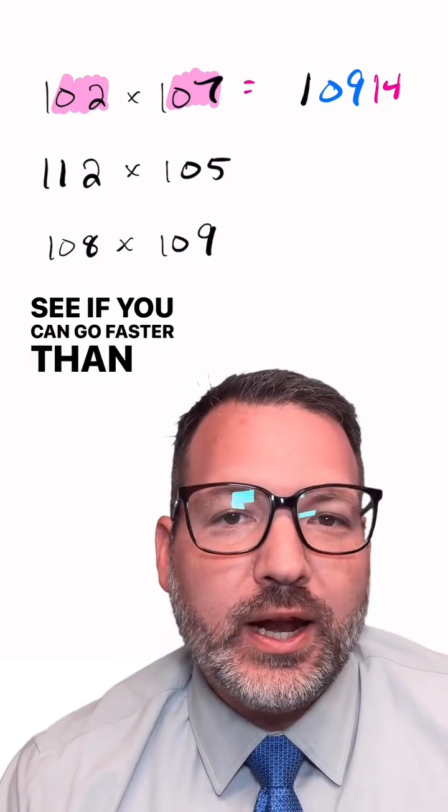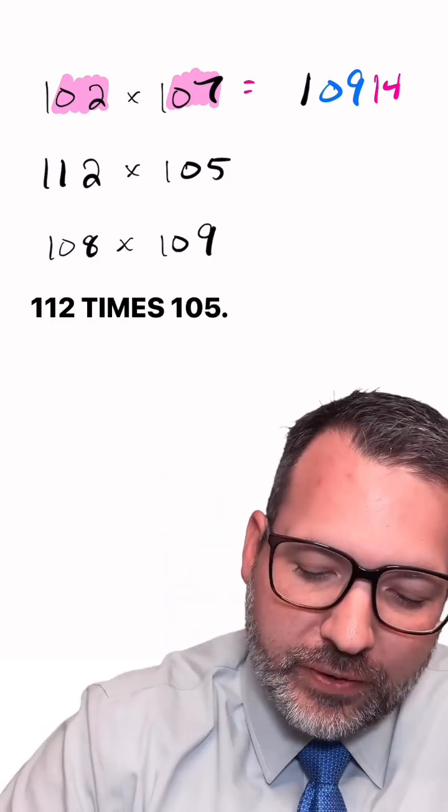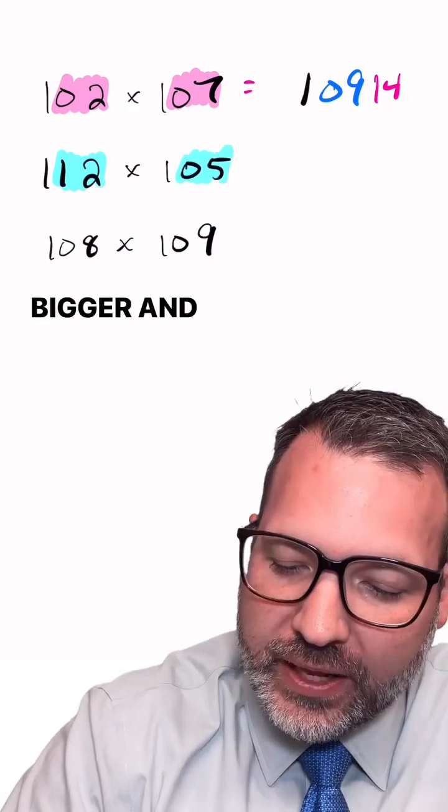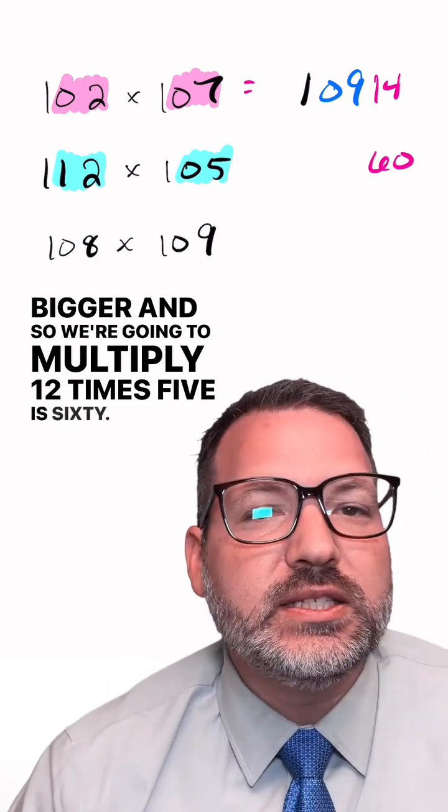See if you can go faster than I can on this next one. 112 times 105. We are looking at two numbers that are 12 bigger and five bigger. And so we're going to multiply 12 times five is 60.